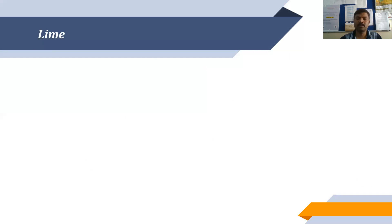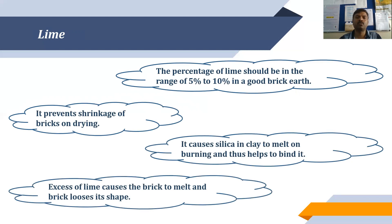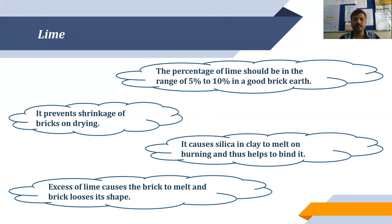The next important constituent is lime. The percentage of lime should be in the range of 5 to 10%. It prevents shrinkage of bricks on drying and causes silica and clay to melt on burning, thus helping to bind the material. Excess of lime causes the brick to melt and lose its shape. During cooking or burning of bricks, some bricks lose their shape and become twisted or melted — that is because of excess lime, which forces the brick to melt and lose shape while burning.